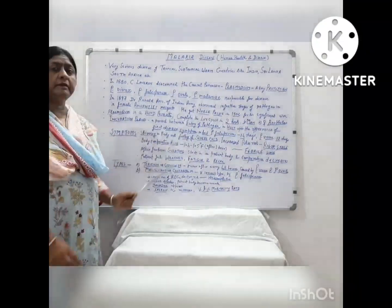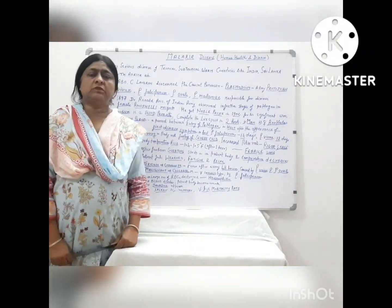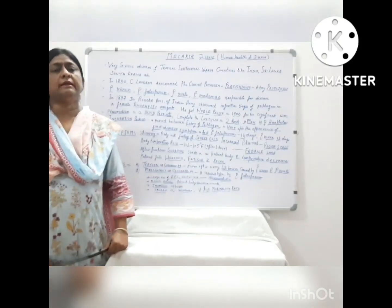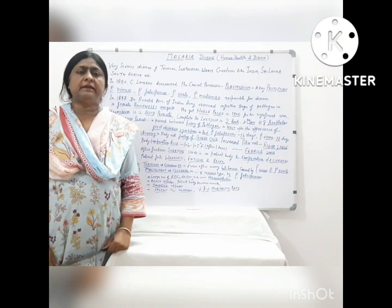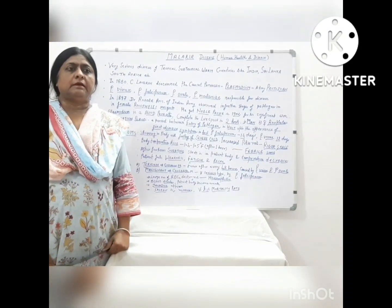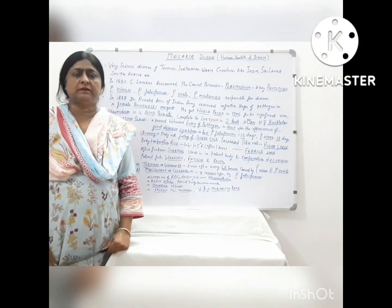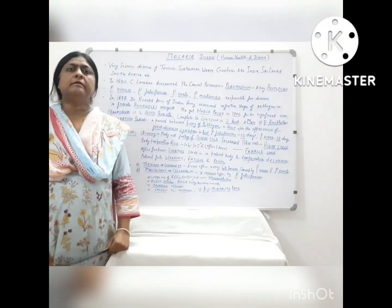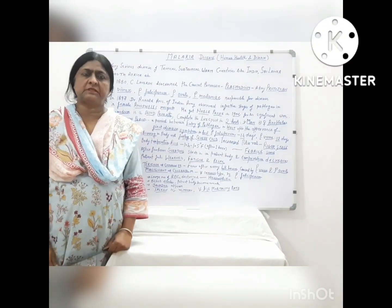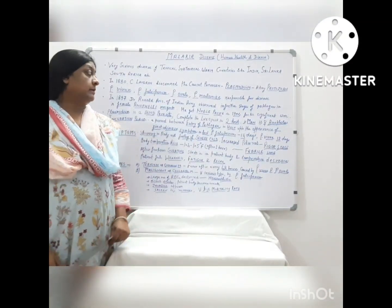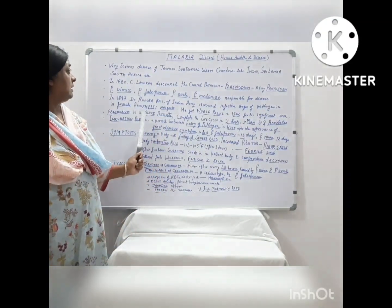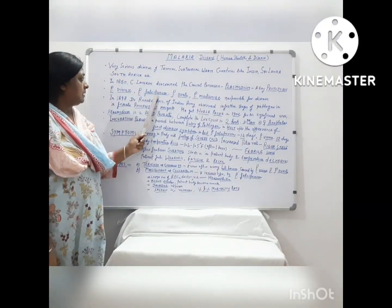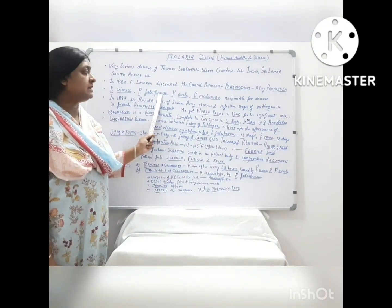Now the incubation period — this is an important term to understand any disease cycle. It is defined as the period between the entry of the pathogen and the appearance of the first symptom. For Plasmodium Vivax it is about 12 days, and for Plasmodium Falciparum it is about 14 days.